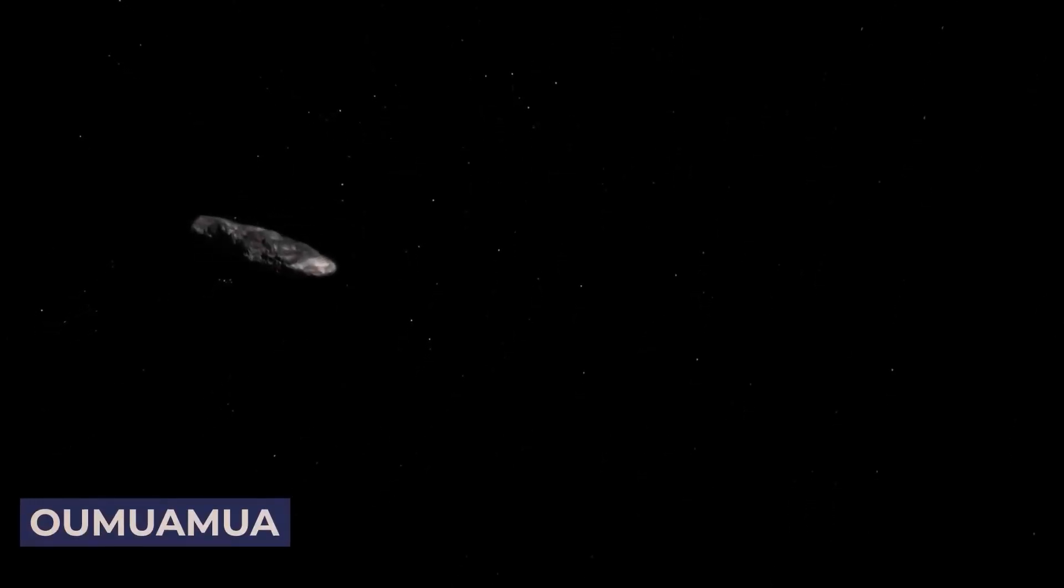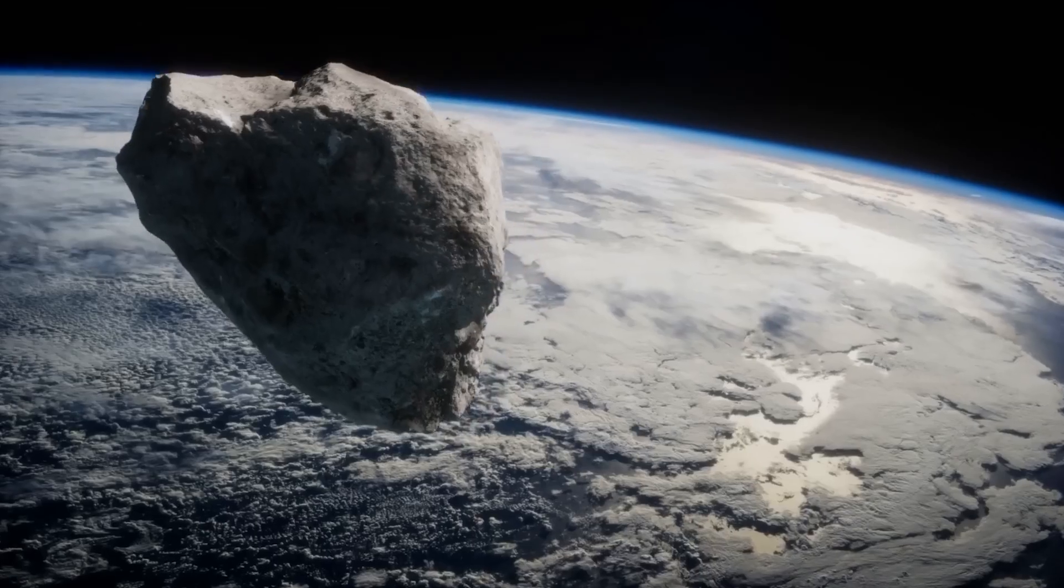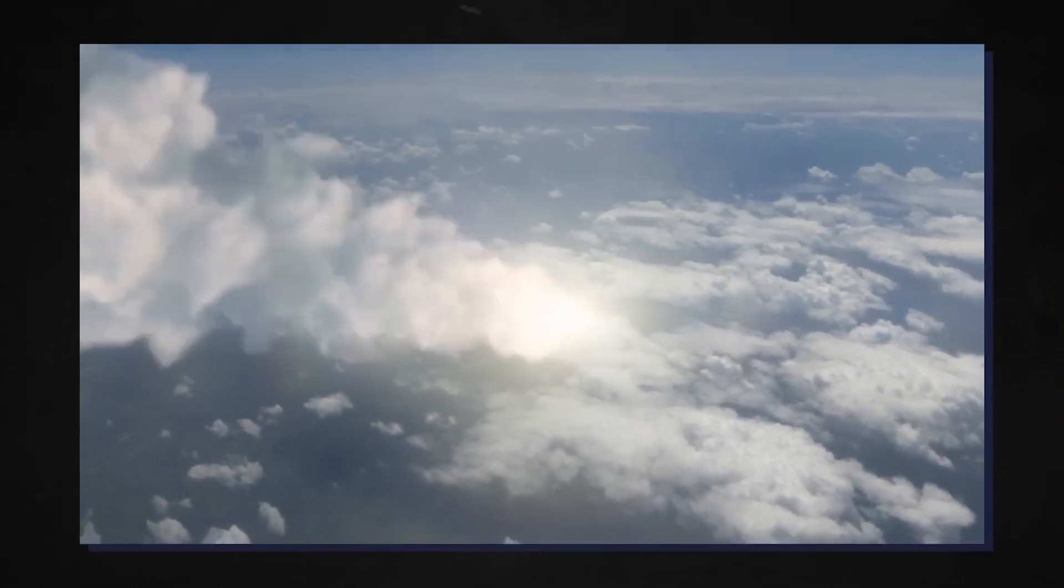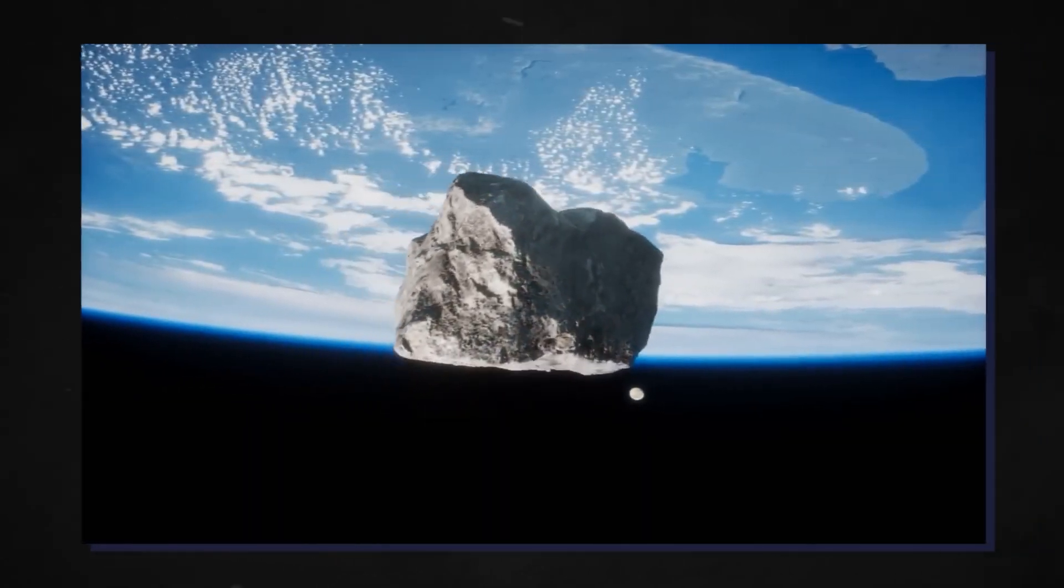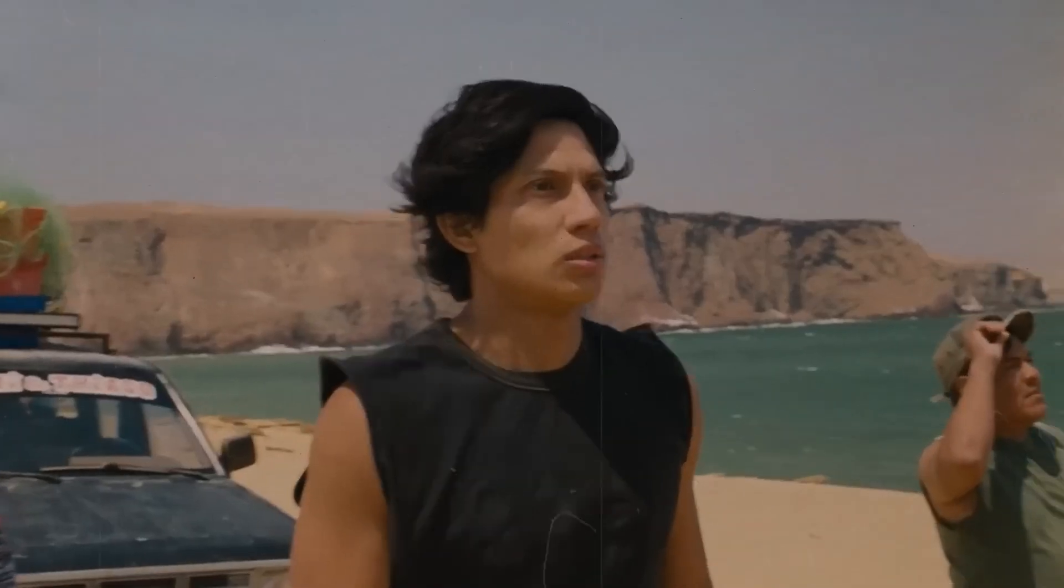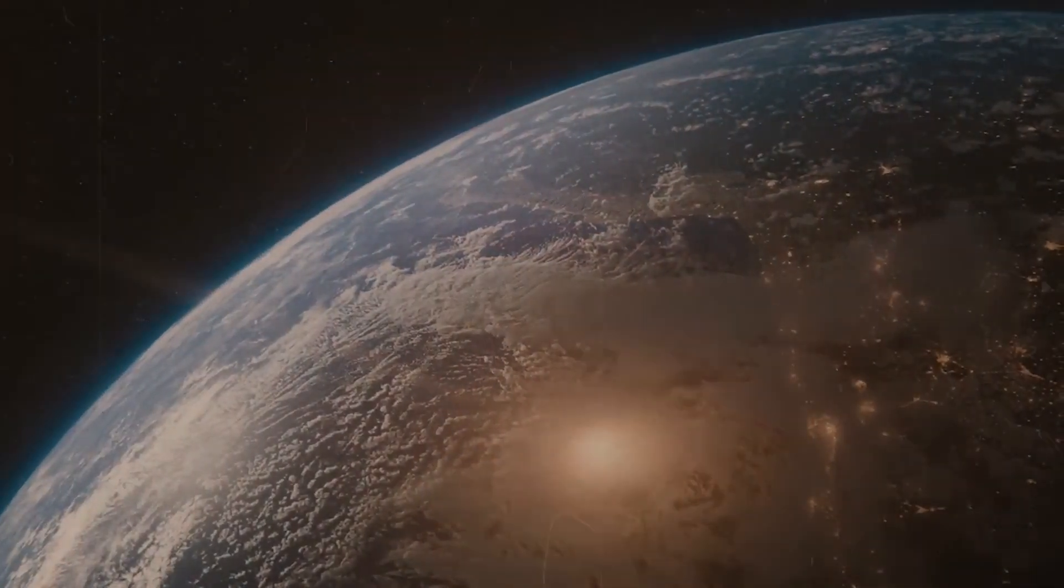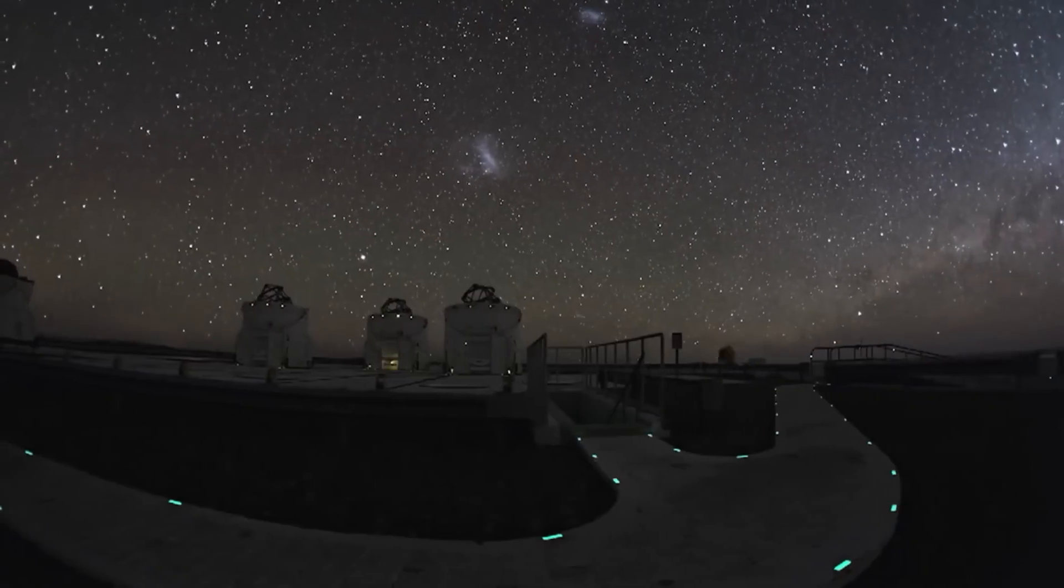The Oumuamua was the first object that came into our solar system from outer space. At first, scientists thought it was just another asteroid wandering about in space, but its strange appearance gave a different impression. Asteroids are usually spherical or irregularly shaped, but the Oumuamua had a one-of-a-kind cigar shape and didn't move in a haphazard motion. Instead, it seemed to glide through space at a fascinating speed.